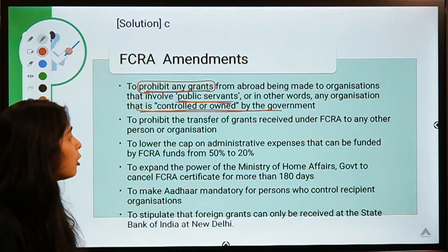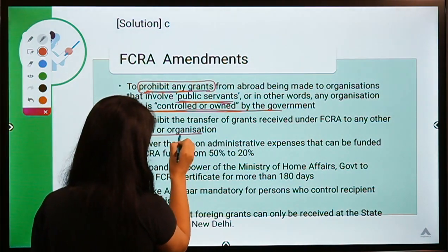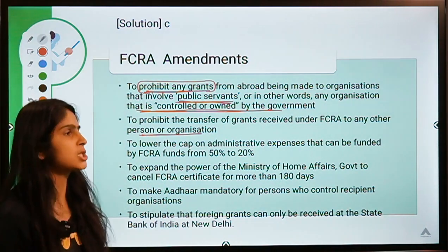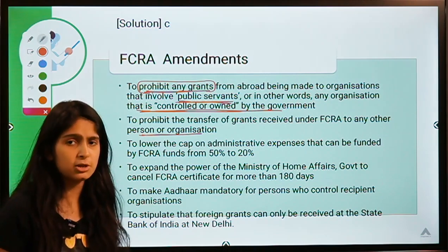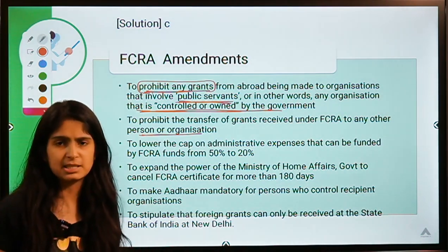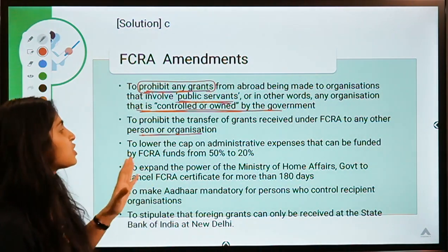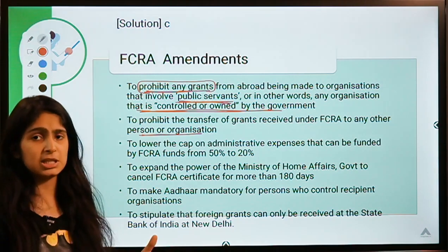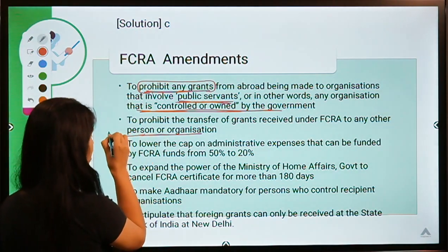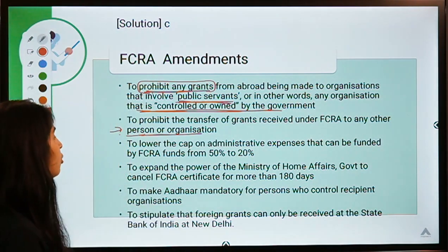The second proposal is prohibiting the transfer of grants received under FCRA to any other person or organization. So if an NGO working for the education of underprivileged children receives funding from a foreign organization, they cannot transfer that money to any other person or organization — they have to use it themselves.